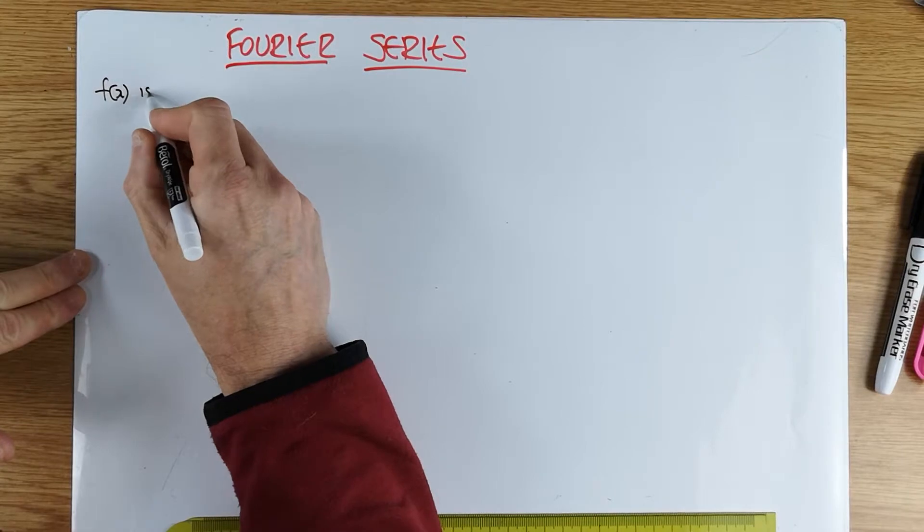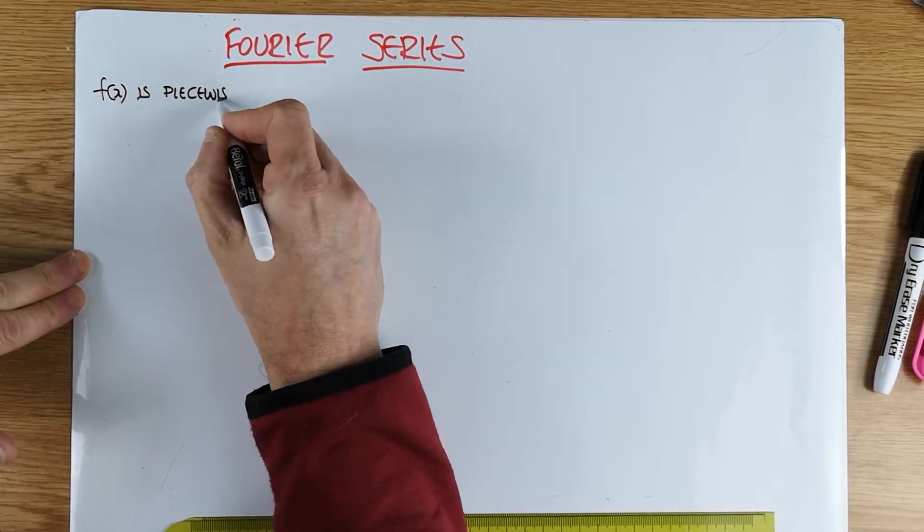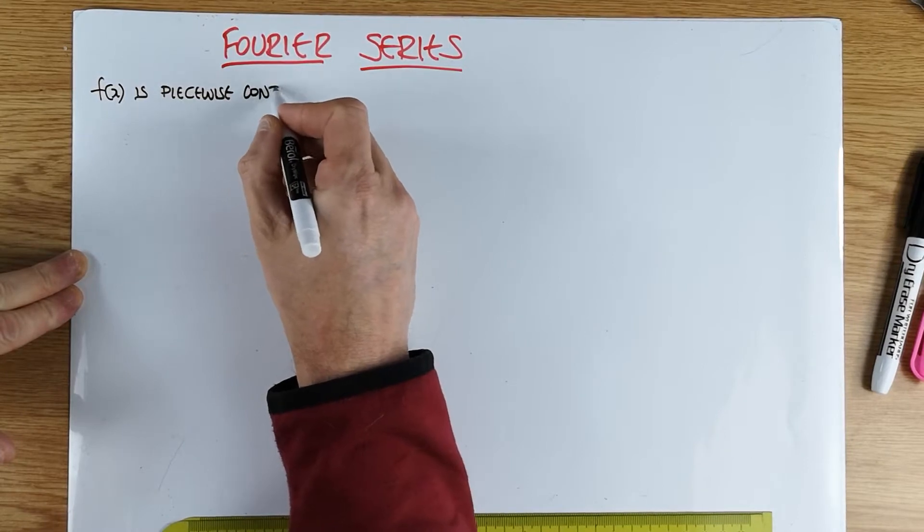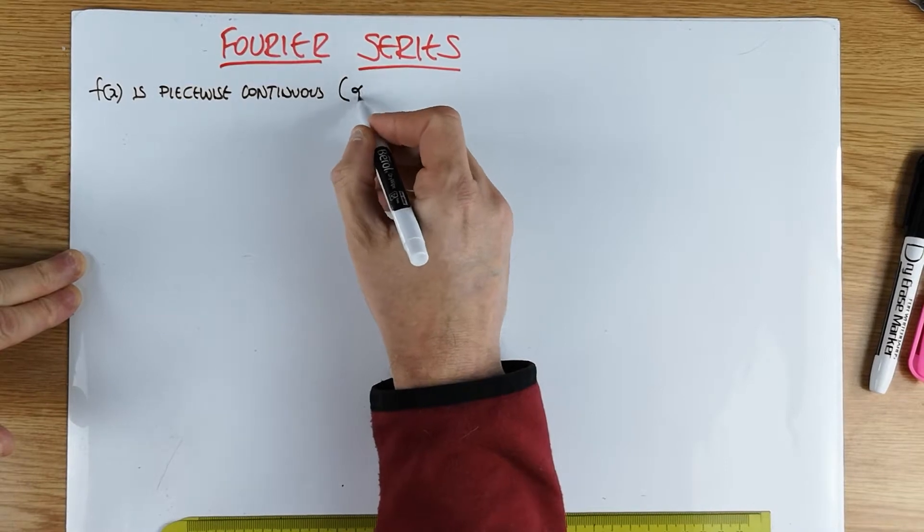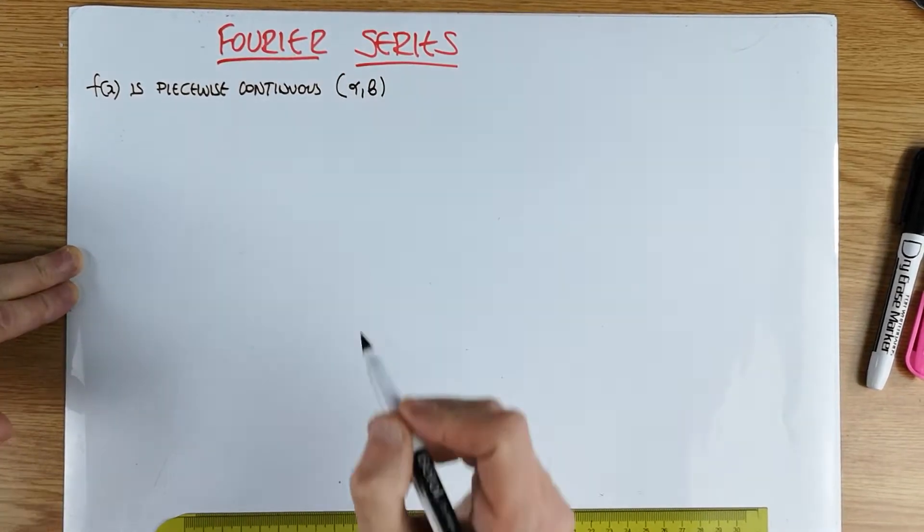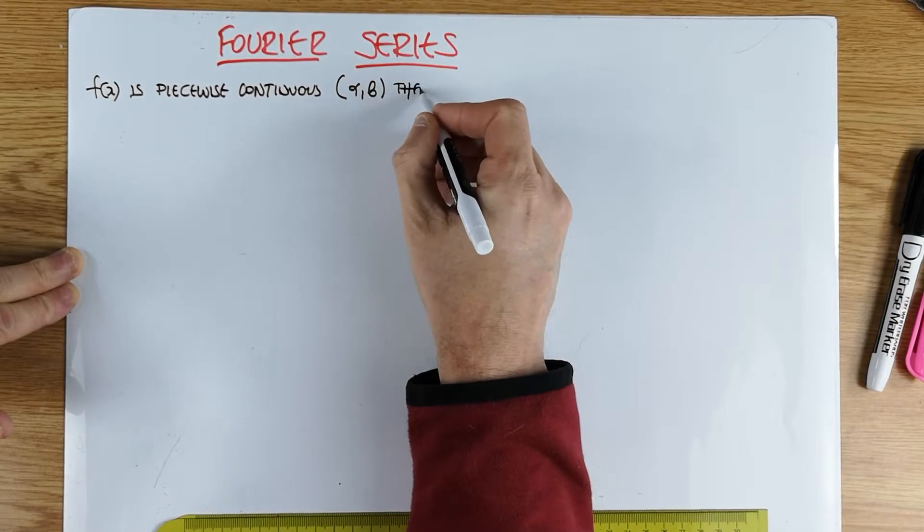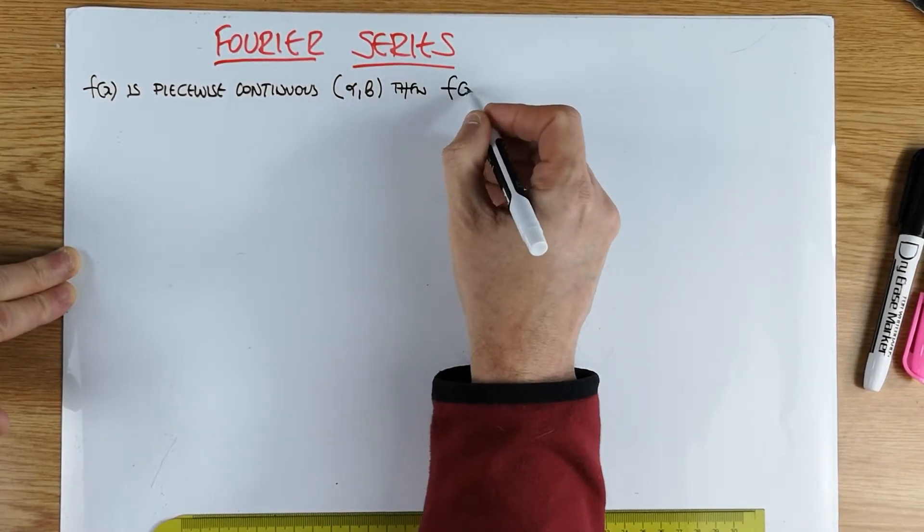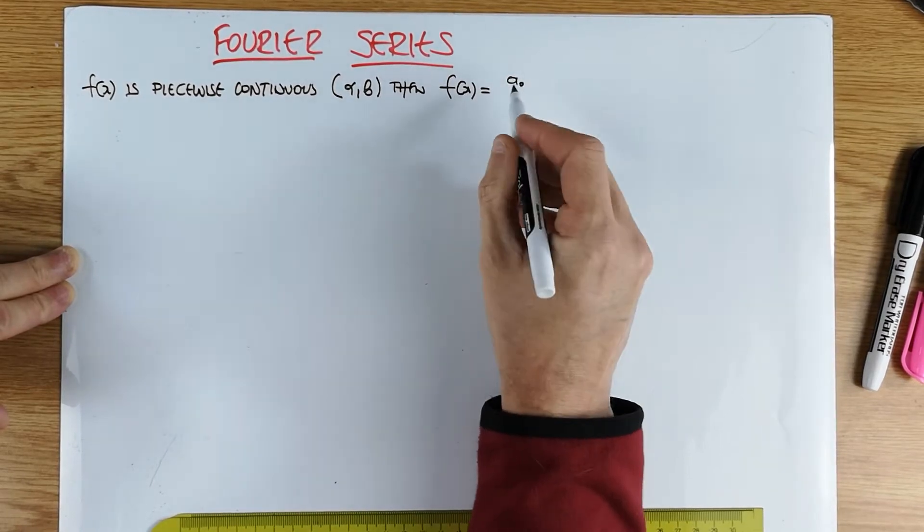We're going to start with the Fourier theorem and this is essentially what we can do. So let's write it. If f of x is piecewise continuous on an interval alpha to beta, then the following thing will be true. Then our f of x can be written in this particular form and I will define all the quantities in due course.